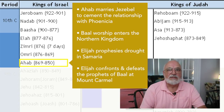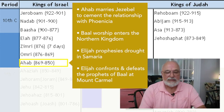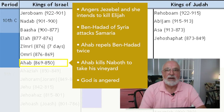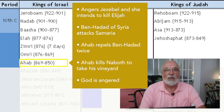Because of this, Elijah the prophet prophesies a drought in Samaria. When the drought is through, Elijah challenges the prophets of Baal at Mount Carmel and defeats them. This angers Jezebel and she intends to kill Elijah, so he has to flee. Meanwhile, Ben-Hadad of Syria attacks Samaria. Ahab repels him twice. Ahab then kills Naboth, an innocent owner of a vineyard, because he wants that vineyard.